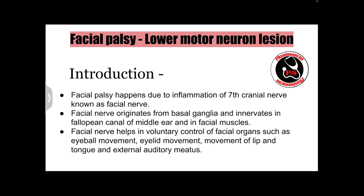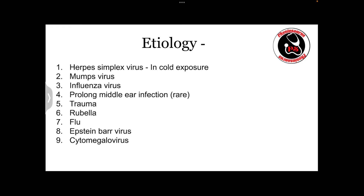The facial nerve helps in the voluntary control of facial organs such as eyeball movement, eyelid movement, movement of the lip and tongue, and the external auditory meatus. Now let's talk about the causes of lower motor neuron facial palsy.